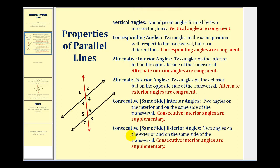And then lastly, we have the consecutive exterior angles, or same side exterior angles — two angles on the exterior, but on the same side of the transversal. These angles are supplementary. So angle two and angle eight are same side exterior angles, which are supplementary, as well as angle one and angle seven. Remember, the relationships stated in red are only true if the two lines intersected by the transversal are parallel lines.